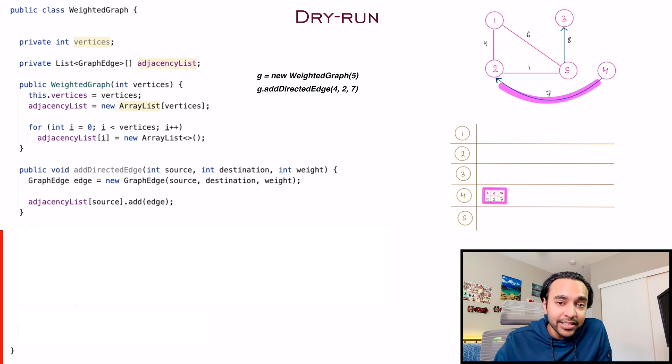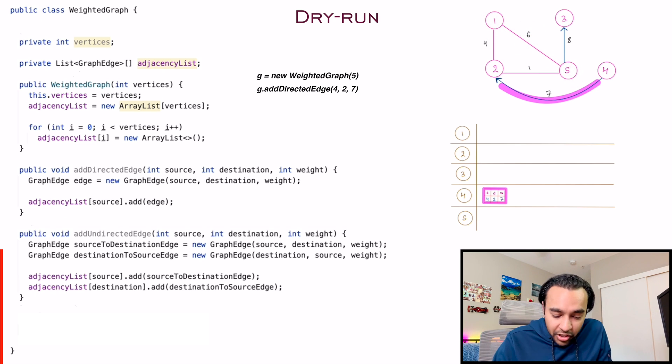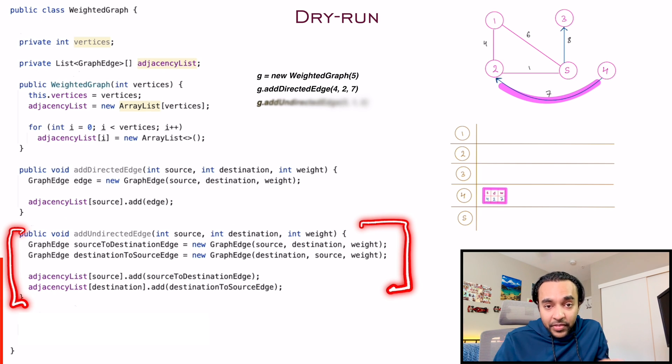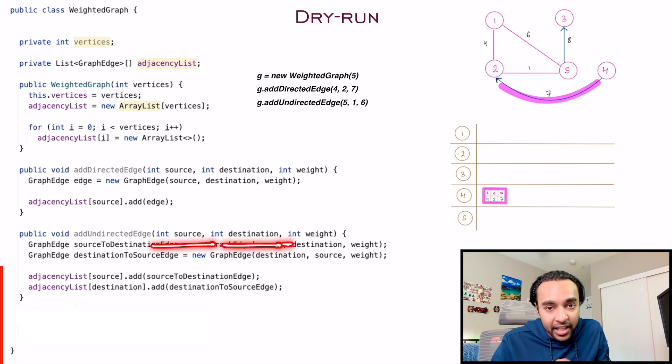Now, let us say I want to add an undirected edge between node five and node one. And it has the weight of six. So look at this implementation now. I have a method add undirected edge. And once again, it takes in three parameters, the source, destination, and the weight.